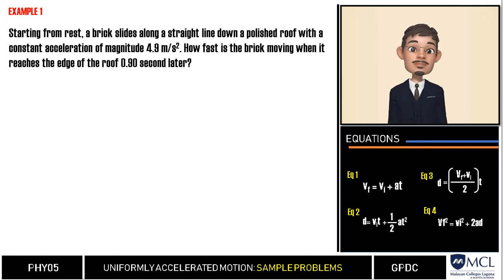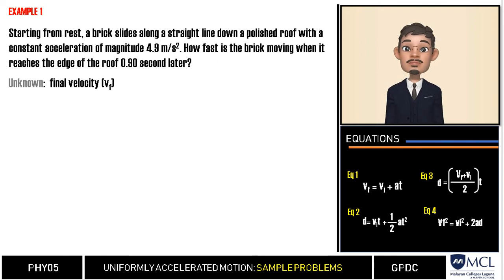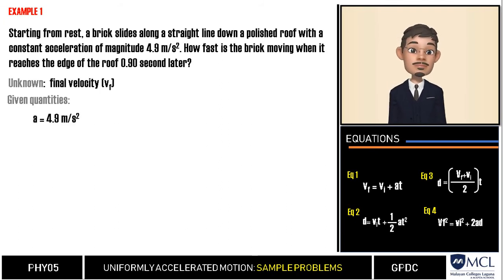What is asked in our problem is the final velocity of the brick. We will list down the given first so we will know the appropriate equation we can use, which you will find in the lower right of this video. Acceleration is 4.9 meters per second squared and time is 0.92 seconds.